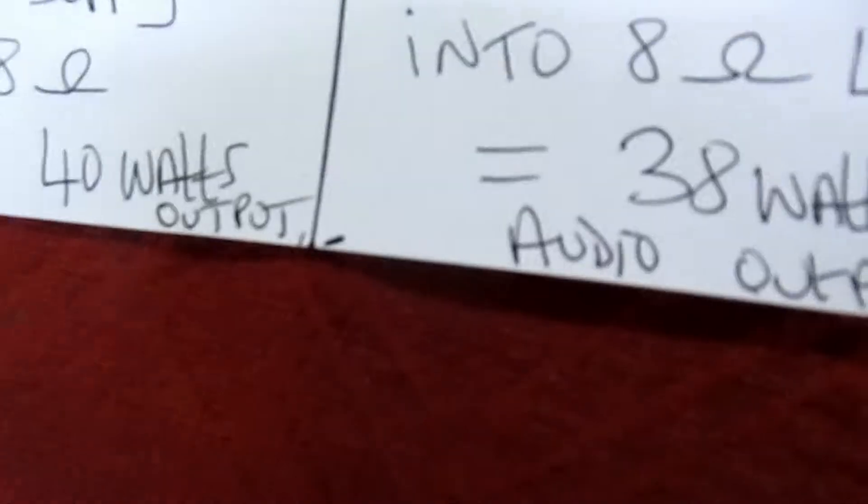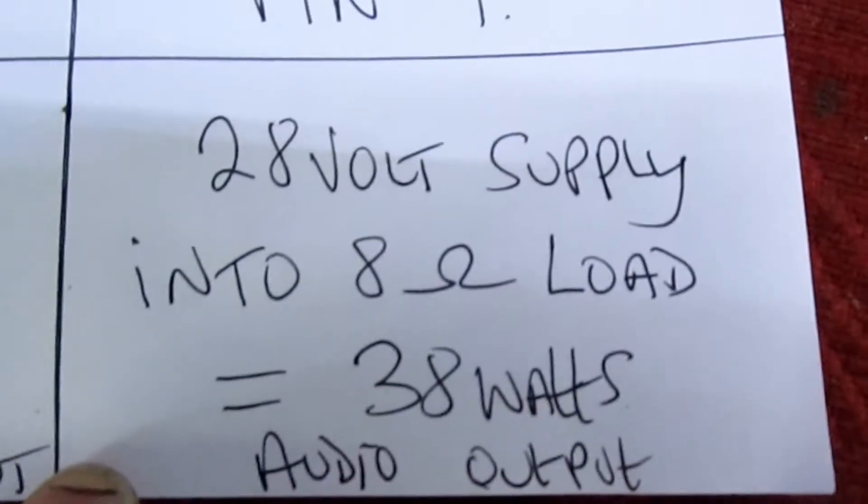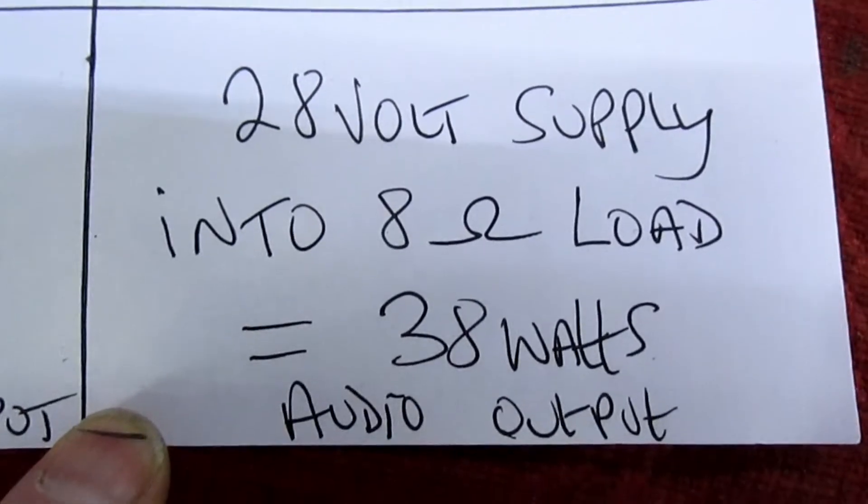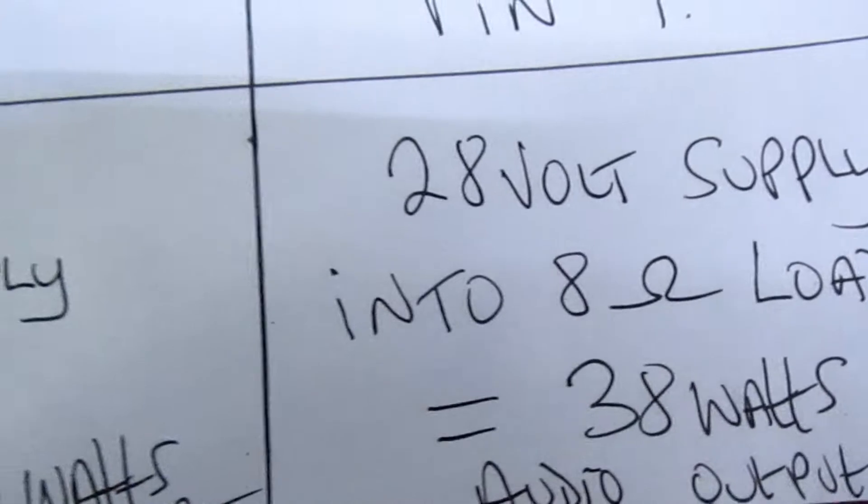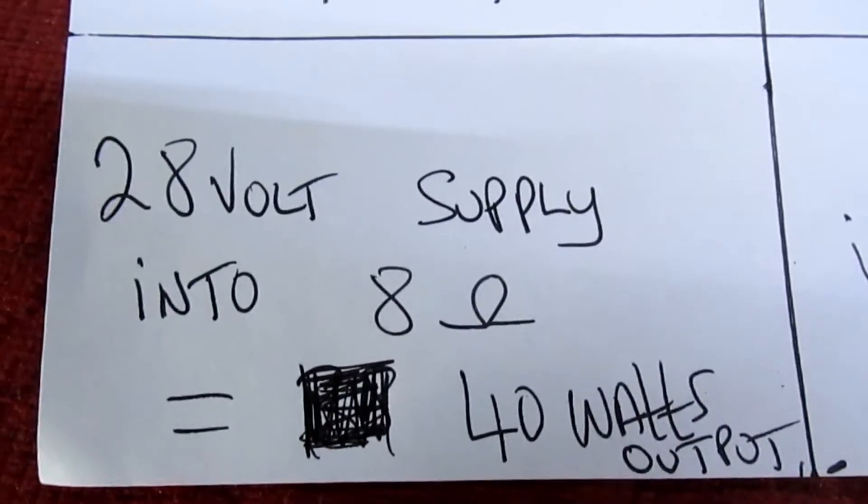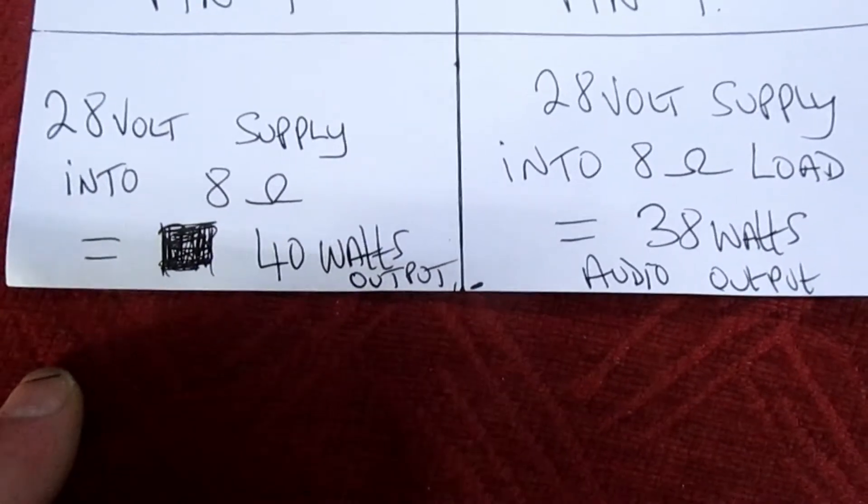It is possible to fit this. For the LM3886 running a 28 volt supply into an 8 ohm load, it gives 38 watts. The TDA1541 at 28 volts supply into 8 ohm gives just 40 watts, so it's very similar, very close.